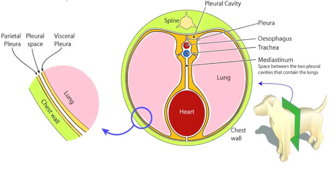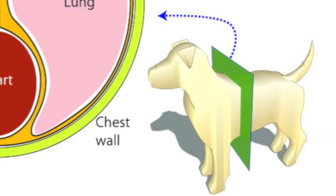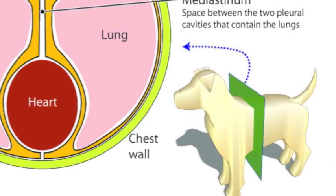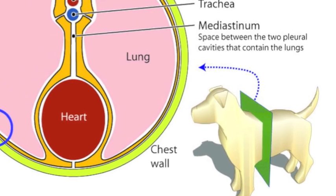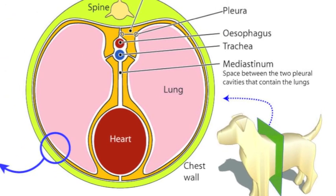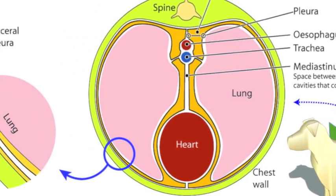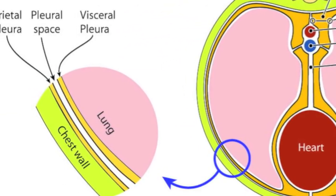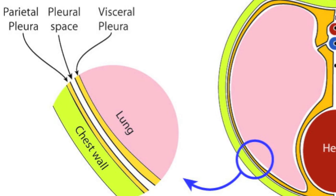To understand a pneumothorax, we do have to have an understanding of the lungs and how they function. This is just a brief overview of the lung and where it sits. Obviously we know the lungs are within the chest cavity. The chest wall is lined by the parietal pleura, and then we have a little space called the pleural space.